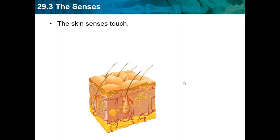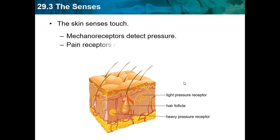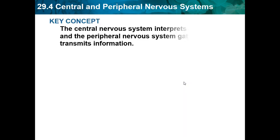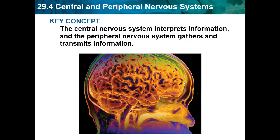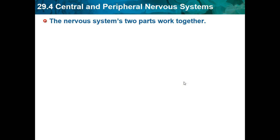The skin senses touch. Section 29.4 covers the central and peripheral nervous system. The central nervous system interprets information, and the peripheral nervous system gathers and transmits information. This is basically how the nervous system is categorized — the two parts work together.